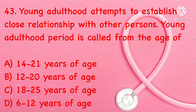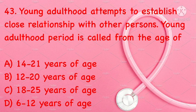Young adult attempts to establish close relationships with other persons. Young adult period is defined as: 14 to 21 years of age, 12 to 20 years of age, 18 to 25 years of age, or 6 to 10 years of age. Correct answer is C: 18 to 25 years of age.